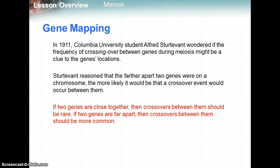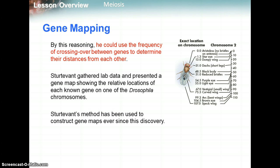If two genes are close together, they'll usually be inherited together — it's unlikely one crossed over and the other didn't. But when they're farther apart, it's more likely that one gene will go on one homologous chromosome and the other on the other homologous chromosome, leading to some separation during meiosis II. By this reasoning, the frequency of crossing over between genes can be used to determine their distances from each other and get an idea of where genes are located on a chromosome.